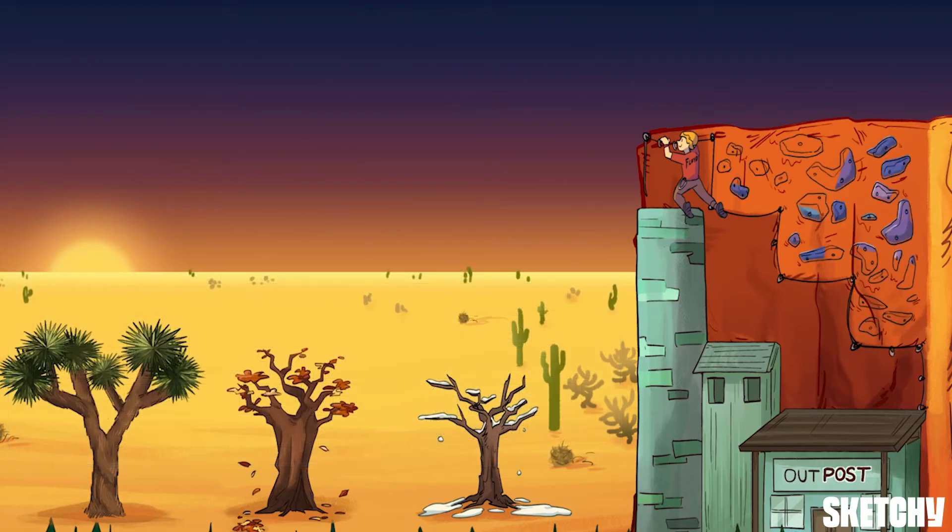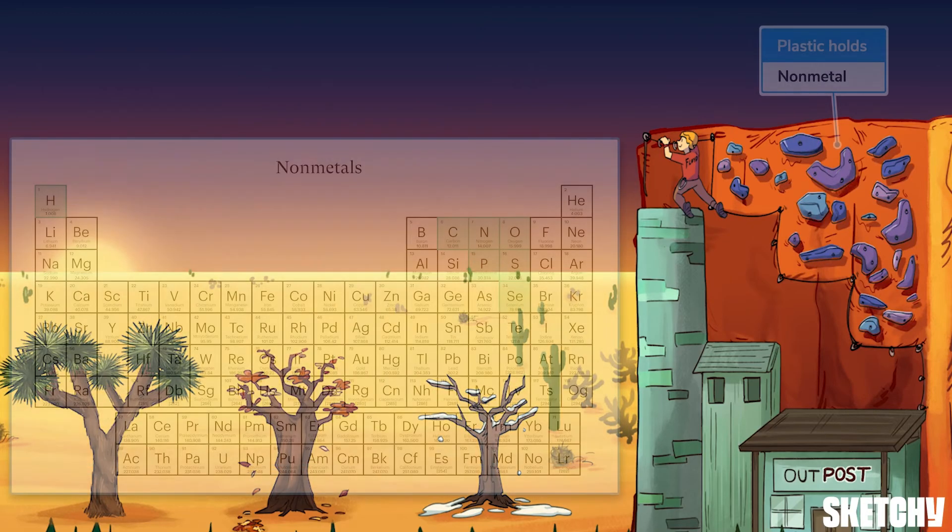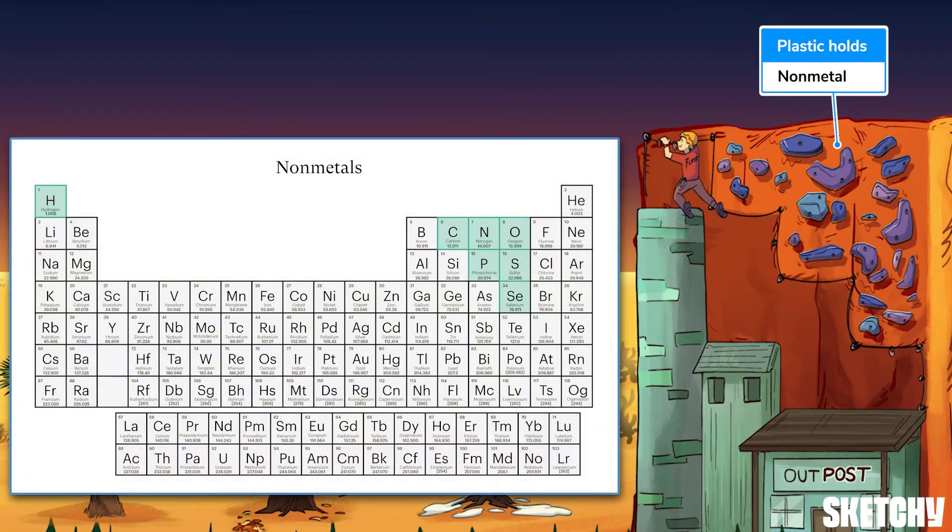And speaking of non-metals, they're up next. These very non-metallic plastic climbing holds should help you remember the area of the periodic table they occupy. Now, groups 17 and 18 are also non-metals, but we'll get to them in a bit. For now, we're just talking about this zigzaggy chunk of the table that includes the non-metals that don't have any other classification. You might sometimes hear these called the other non-metals. This category includes many of the most abundant elements on Earth, like carbon, oxygen, and nitrogen.